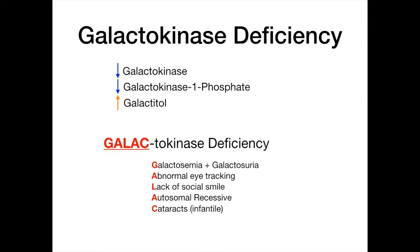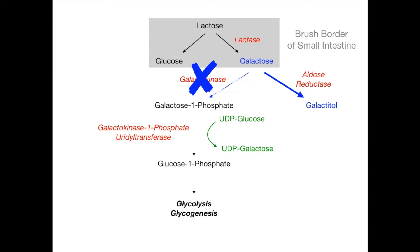To remember the findings, use the mnemonic GALAC: G for galactosemia and galactosuria, A for abnormal eye tracking due to galactitol trapped in the eye, L for lack of a social smile, A for autosomal recessive, C for cataracts. That's galactokinase deficiency — not as bad as the next disease we'll discuss.